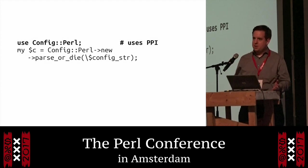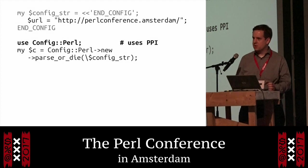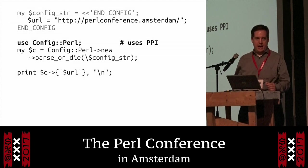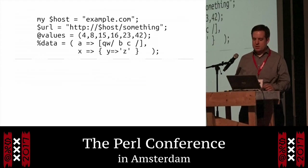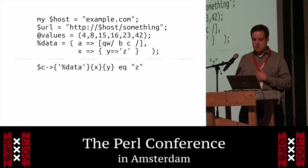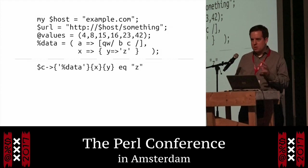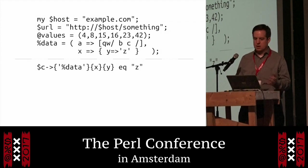So I used PPI to write Config::Perl. You give Config::Perl a filename or reference to a string, just like PPI, and it parses that into a Perl data structure. Here's a simple example — just one variable in this configuration. You give that to Config::Perl and it turns that into a hash reference where you access the variable by its full name and get back the value. Things I support are scalars, arrays, hashes, anonymous arrays, the 'qw' operator, and simple variable interpolation. The way you access a value is with this sort of symbol-table-like hash reference — you access '%data' as the key, and then the rest is just like a regular Perl data structure.